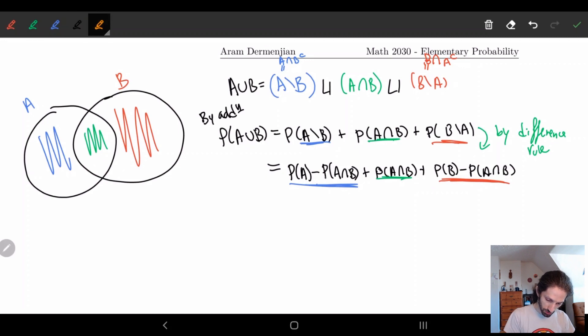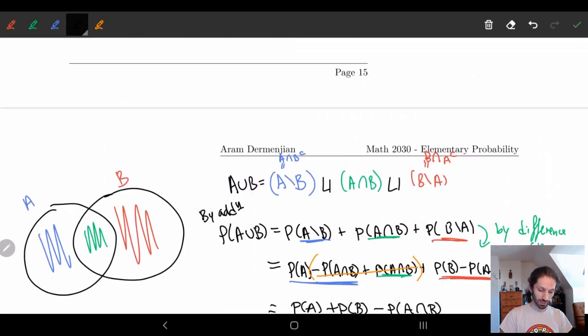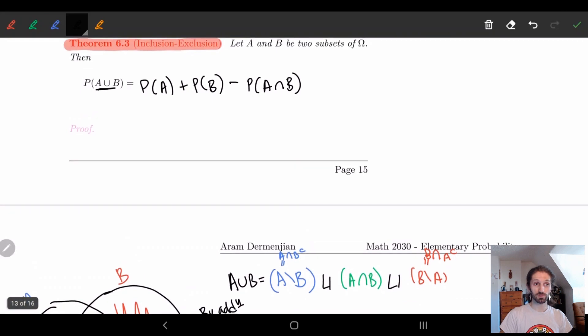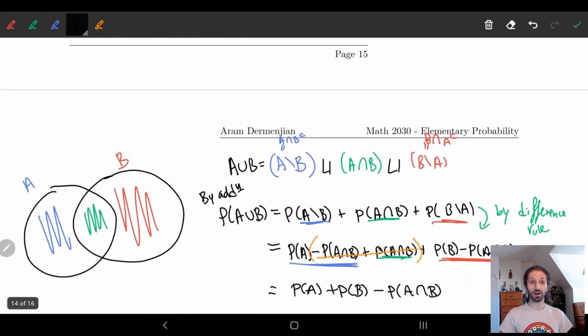And then if you notice these two here, they cancel. They're the same thing. So they cancel. And we're left with P(A) plus P(B) minus P(A intersect B). And that's it. We're done. Nice and simple. And you can kind of see that's exactly what we have. P(A) plus P(B) minus P(A intersect B).